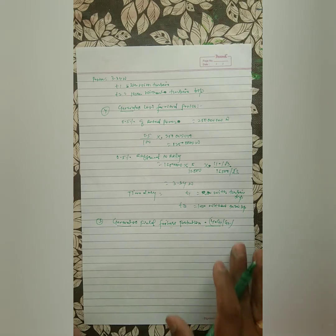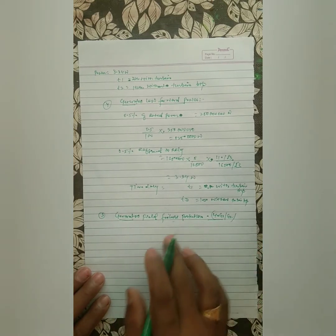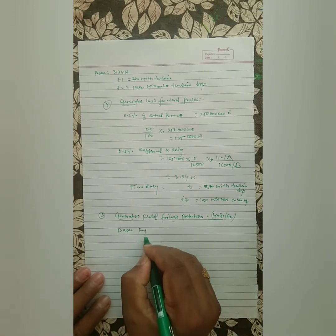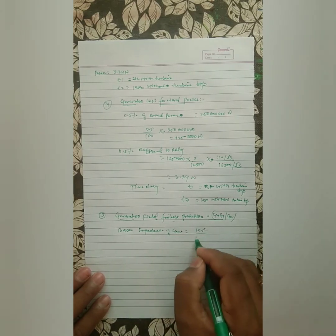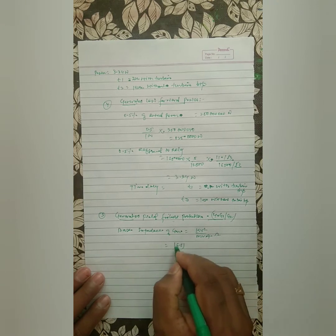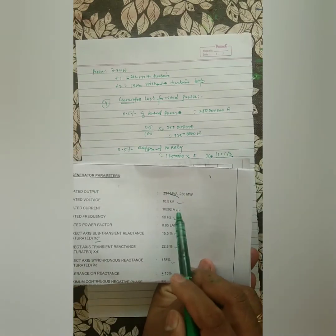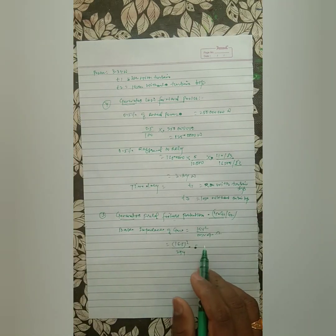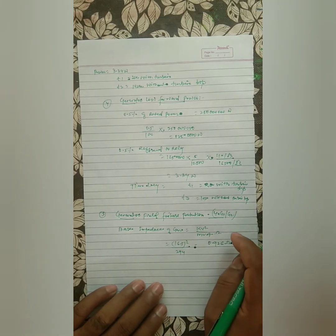In this video, we are concentrating on calculating the parameters and how to set them in the relay. We calculate the base impedance of the generator: base impedance = kV² / MVA = 16.5² / 294 = 0.926 ohm.